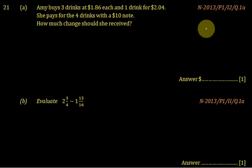Question 1 in paper 1, number 2013. The question says Amy buys 3 drinks at $1.86 each and 1 drink for $2.04. She pays for the 4 drinks with a $10 note. How much change should she receive?